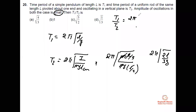T equals 2π under root. What is your answer? The amplitude of oscillation in both cases is the same. Amplitude is the same. It means you take t1 by t2. Take t1 by t2 and look at your answer.